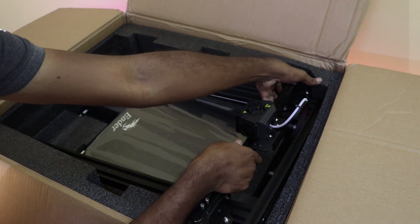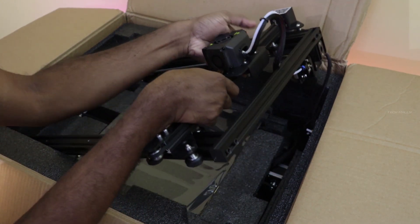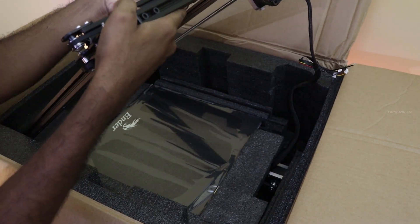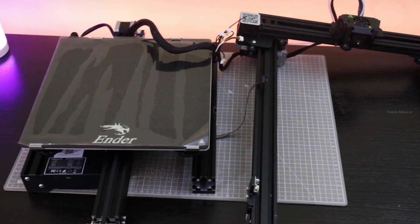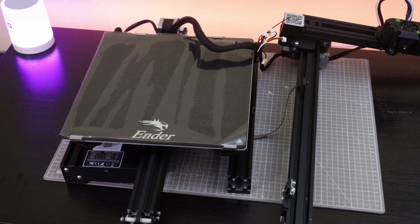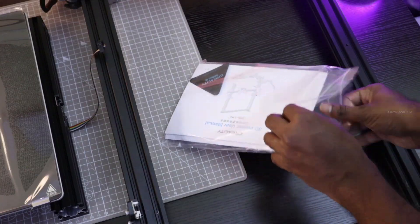It was a bit difficult to take out the base and top of the printer since the cables are attached to each other. The printer is almost 70% assembled. It may take only maximum 15 to 20 minutes to fully assemble.